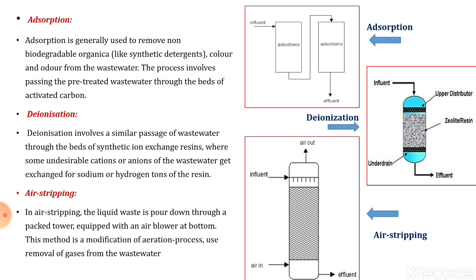The effluent enters from the top. Resins like zeolite or synthetic resins are used. The influent is passed through, where cations and anions are separated, and the clear effluent is taken out from the bottom.